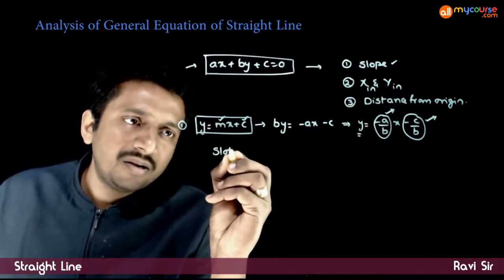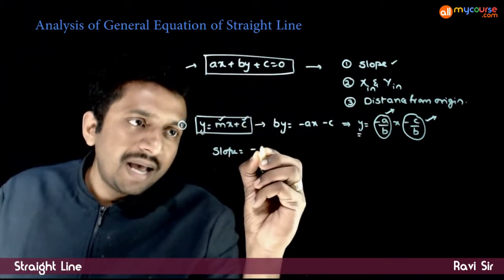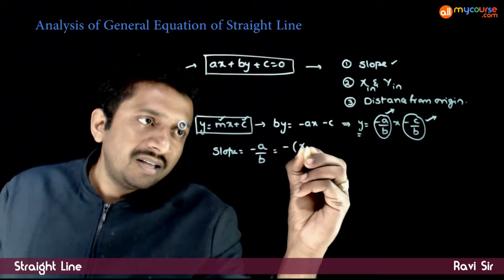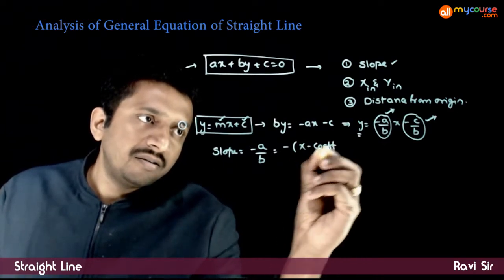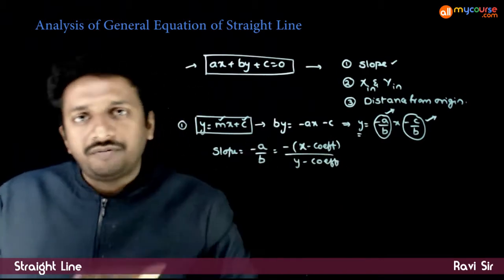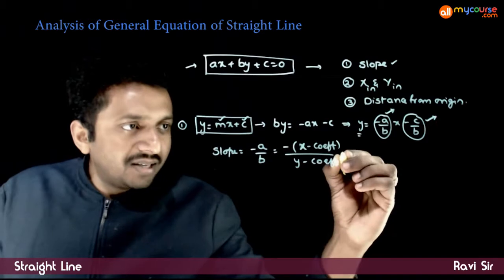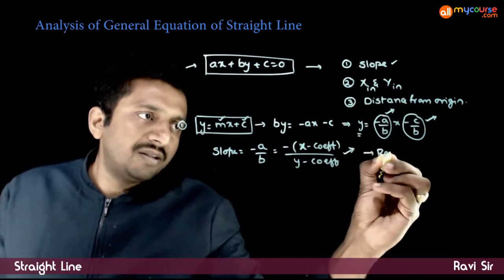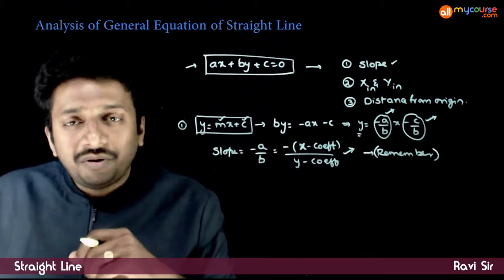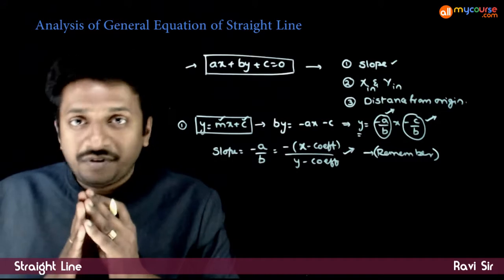The slope of ax plus by plus c is equal to 0 is nothing but minus a by b — that is, minus of the x coefficient divided by the y coefficient. So in any line, if you do minus of x coefficient by y coefficient, you get the slope of the line. You need to remember this; you are not expected to derive this every time. From now on, slope is minus of x coefficient by y coefficient.